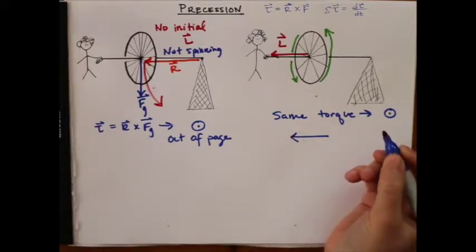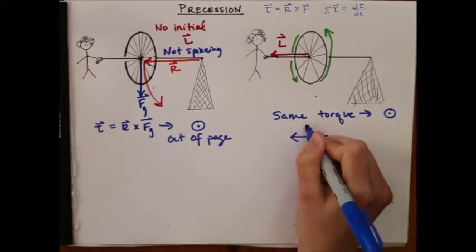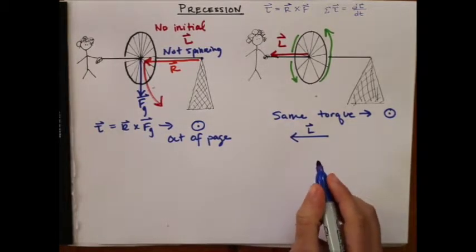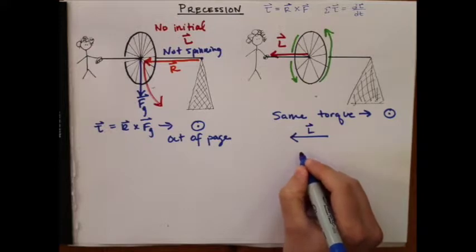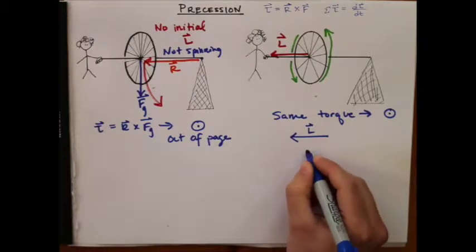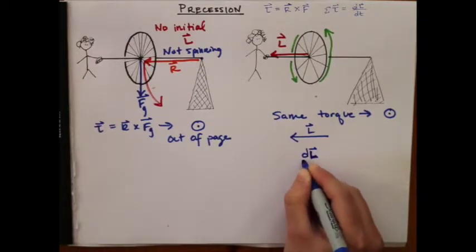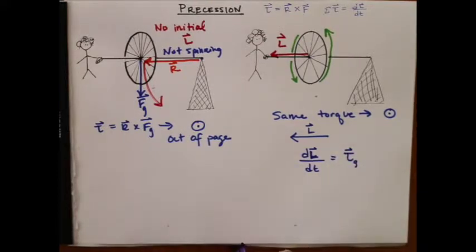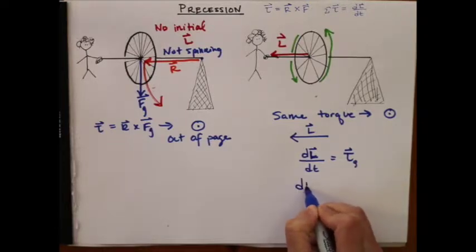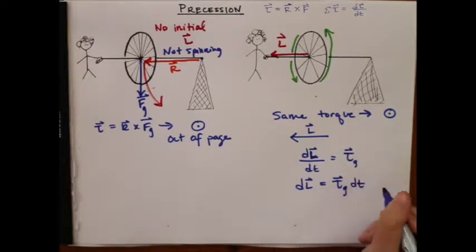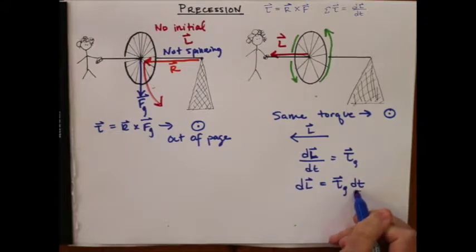The initial angular momentum points this way, and so then we're going to get a little dL applied, added to this L. So dL/dt is the torque due to gravity, which means that little piece of L we add is just the torque applied for an infinitesimal amount of time.